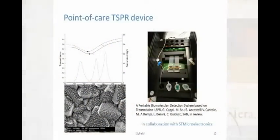We want to develop point-of-care sensors, so we are working on two techniques. One is a novel approach called transmission SPR, based on nano islands of gold that provide a transparent substrate. We are working on the immobilization of aptamer molecules on this surface. Meanwhile, we have developed a small point-of-care system able to detect the shift in a plasmon peak with an accuracy of one nanometer — which is definitely comparable to what conventional SPR provides.